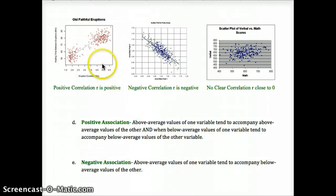Positive association - above average values of one variable accompany above average of a second. Negative - above average values of one variable accompany lower than average values of a second variable, or an inverse relationship.